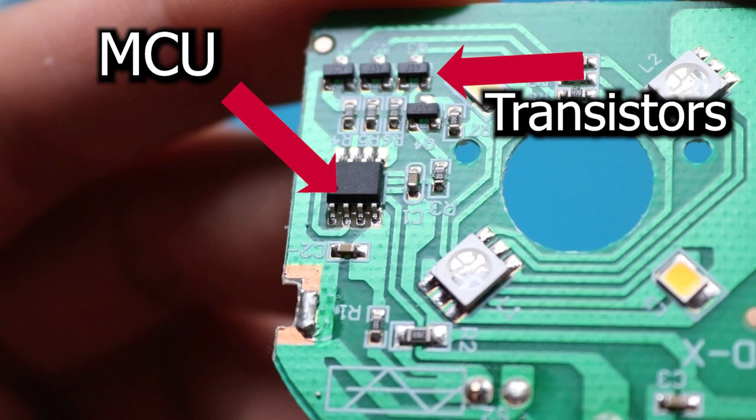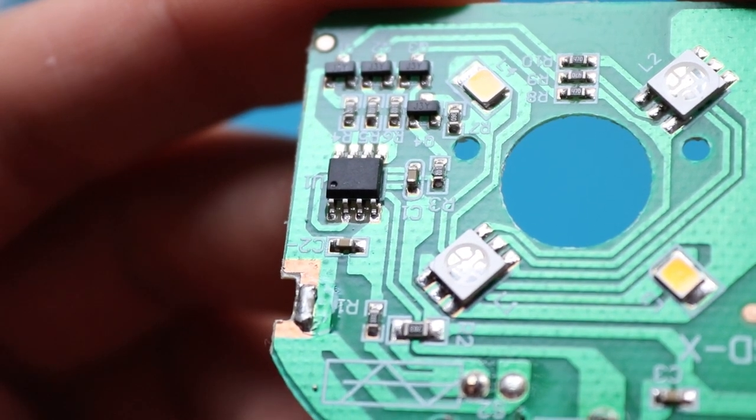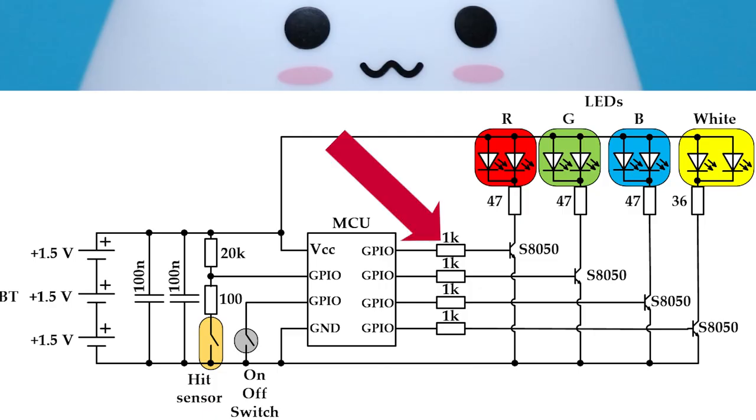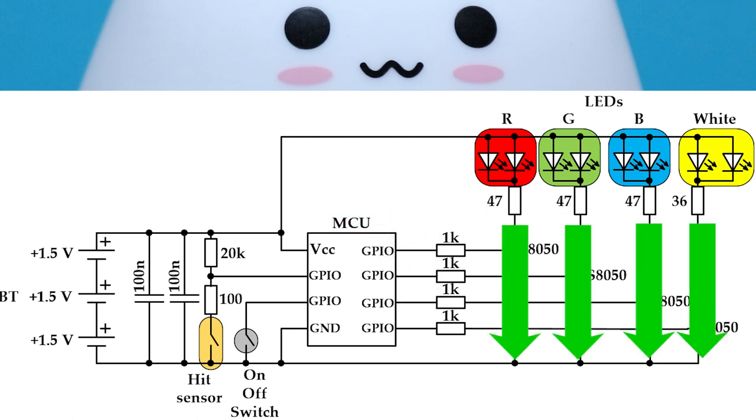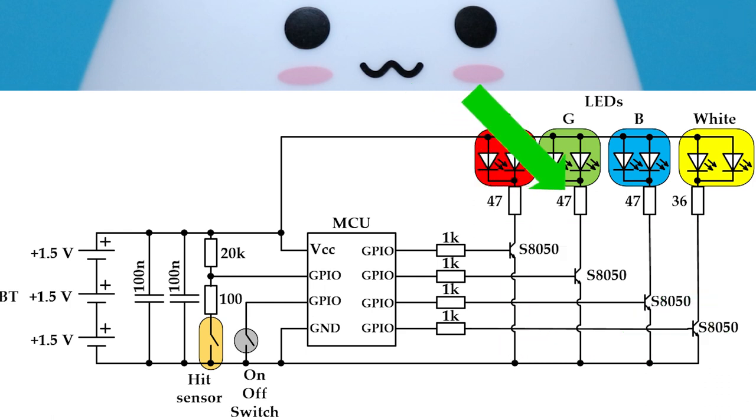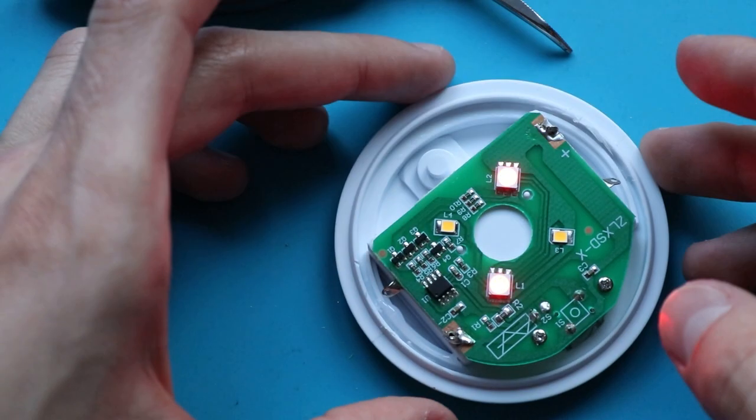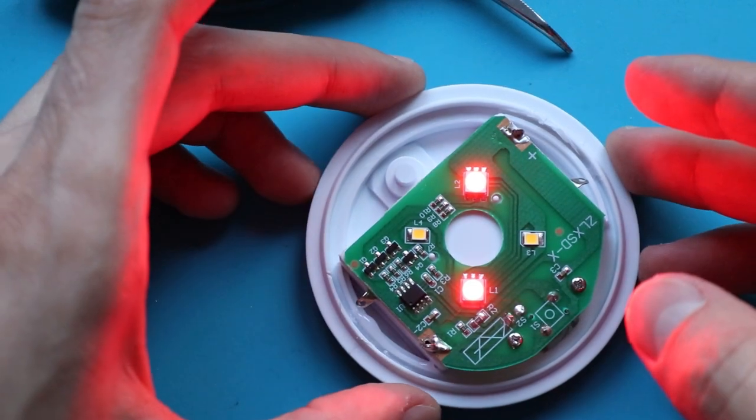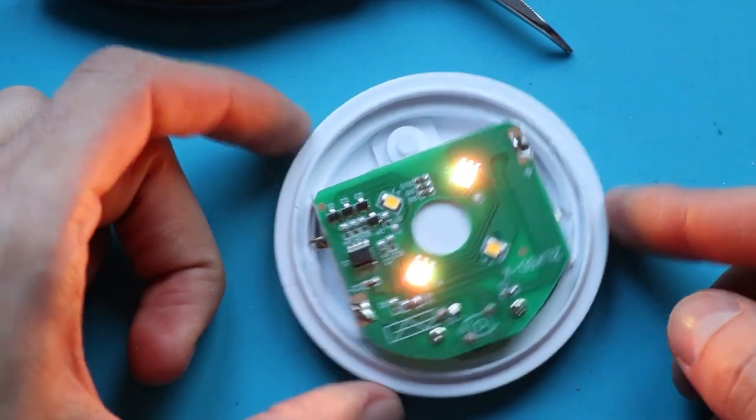So, MCU supplies only small current to the transistor base. Current is limited by this resistor, and here through the LEDs much higher current flows, which is already limited by another resistor. Now it is really interesting to look how MCU actually controls those LEDs. Look at PWM signals, which it creates.